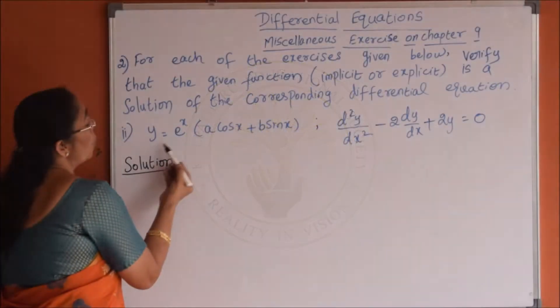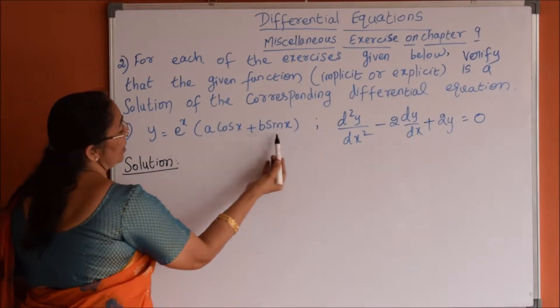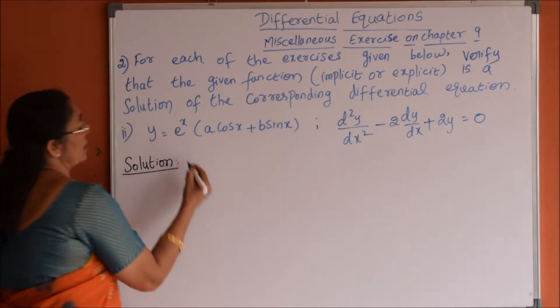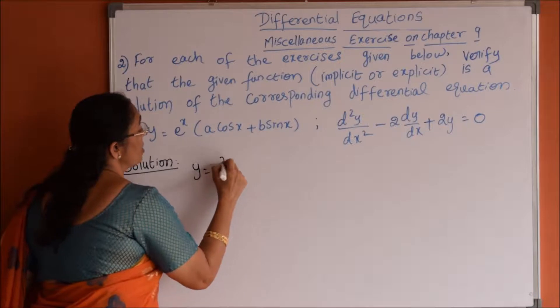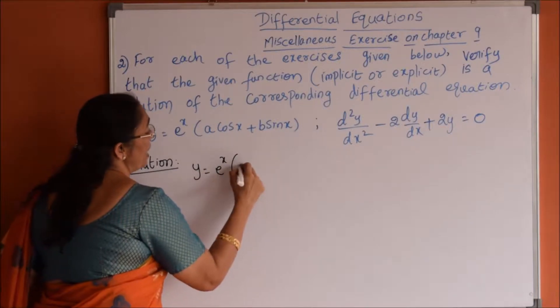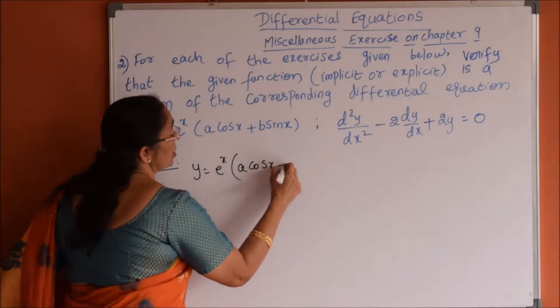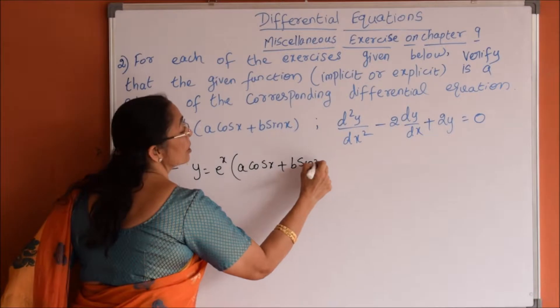Second problem: y is equal to e power x into a cos x plus b sin x. The given equation is e power x into a cos x plus b sin x.